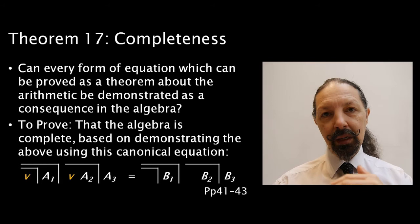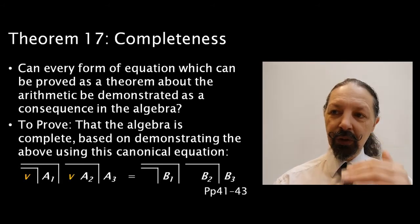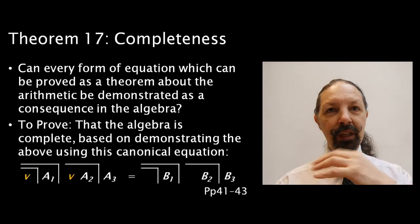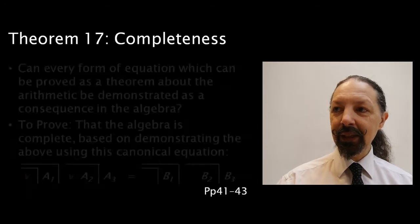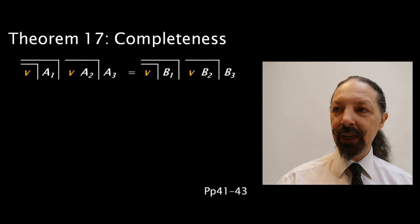Now he's taking a canonical equation, it's got two levels, it's got constant terms, it's got variable terms, and it's got oscillating terms, and he's asking whether it can be.